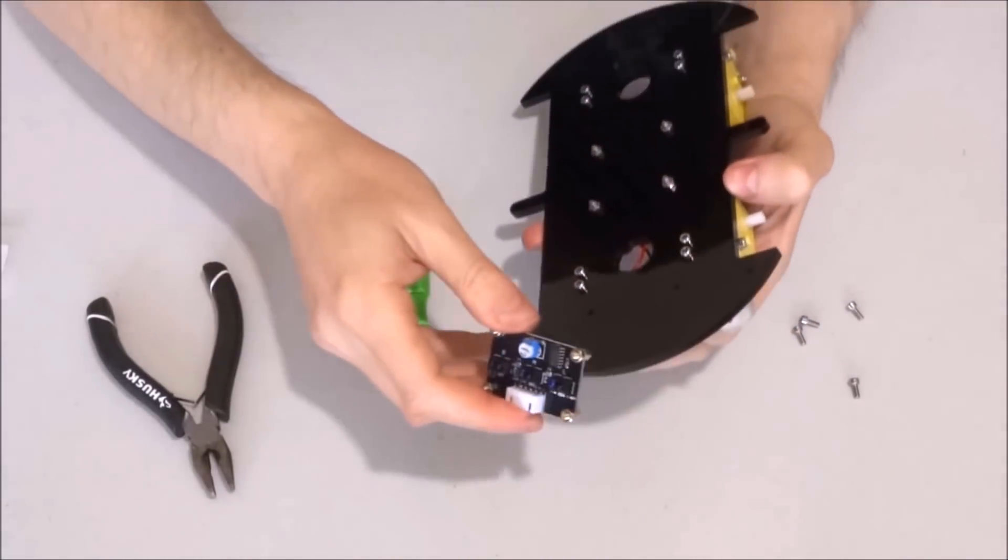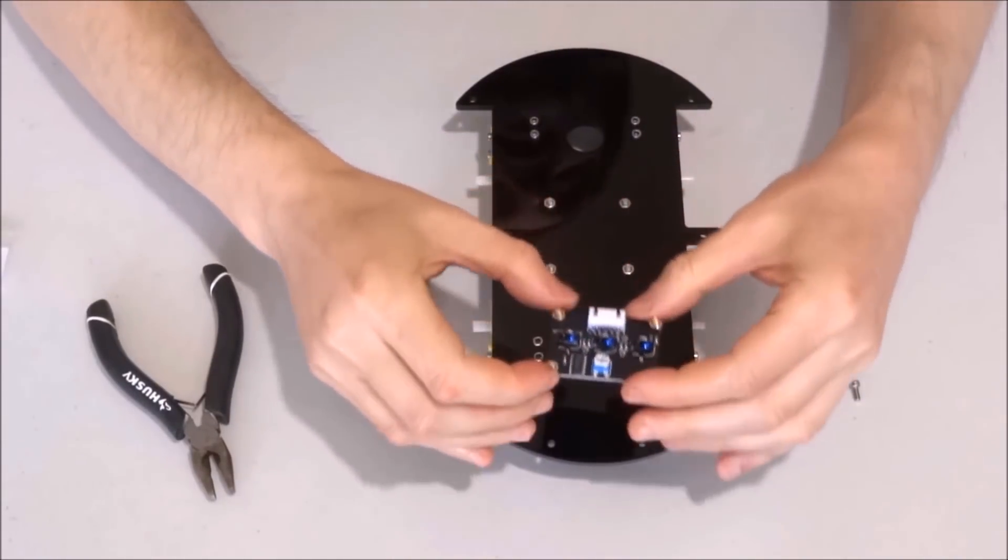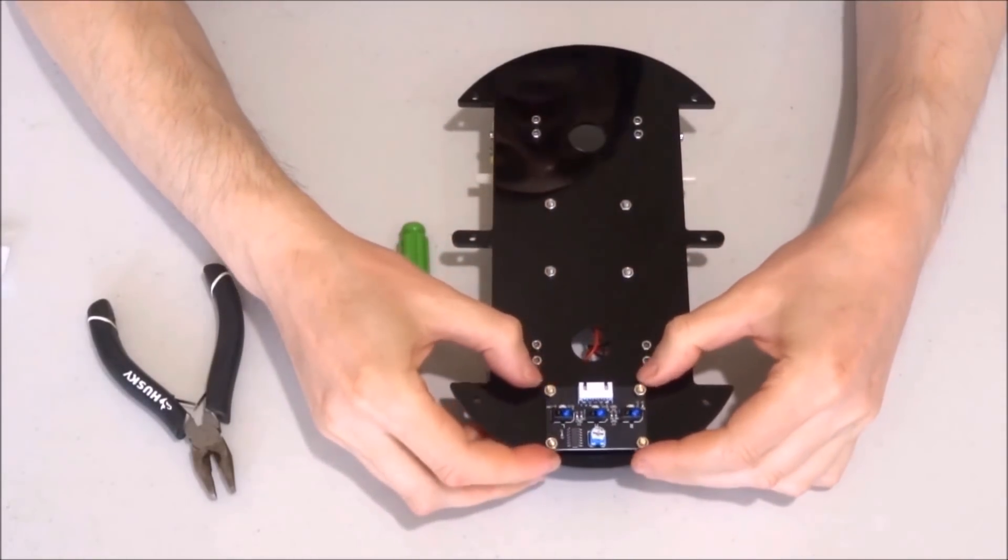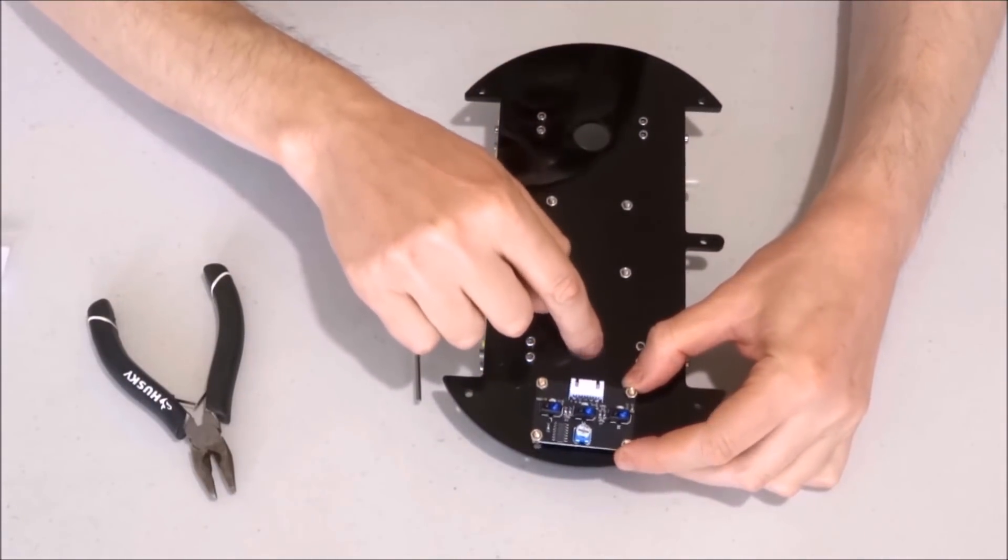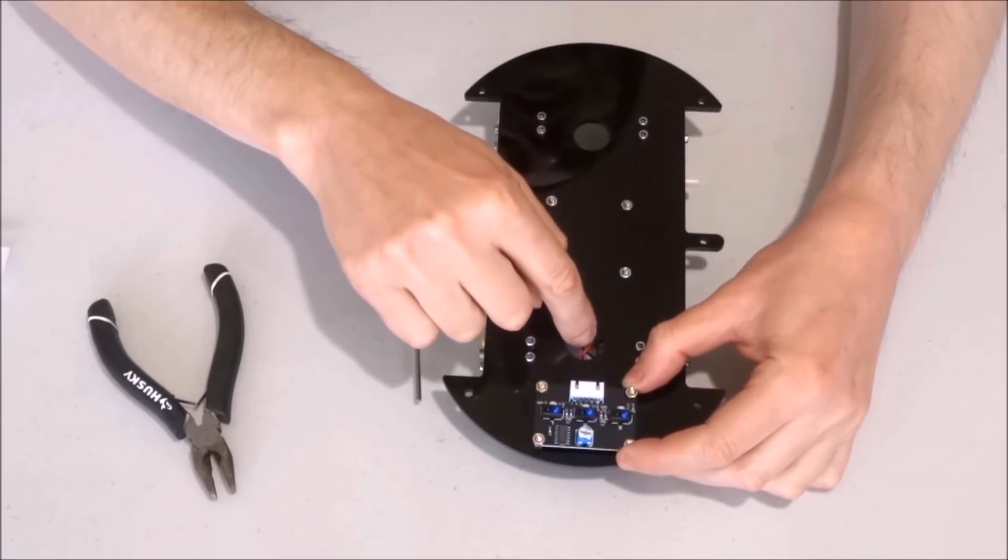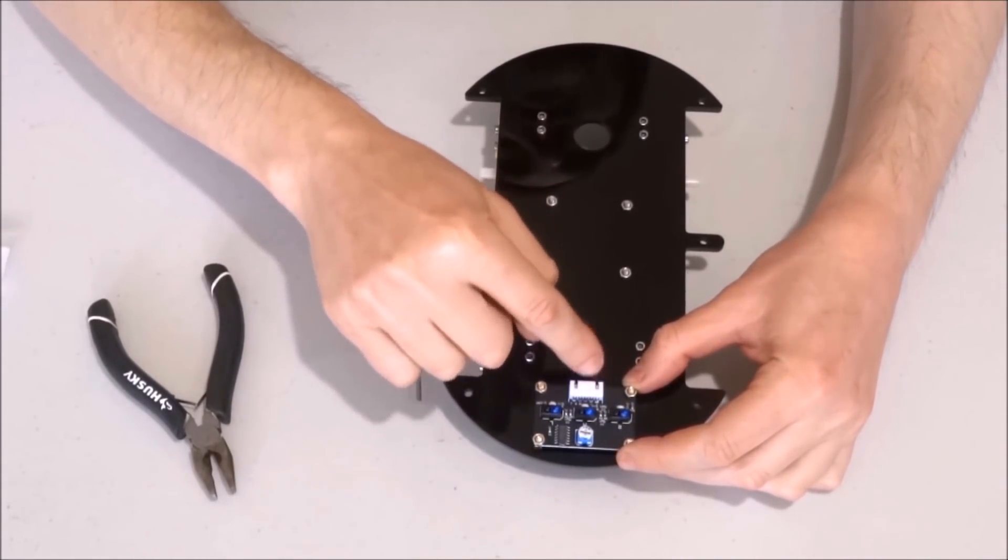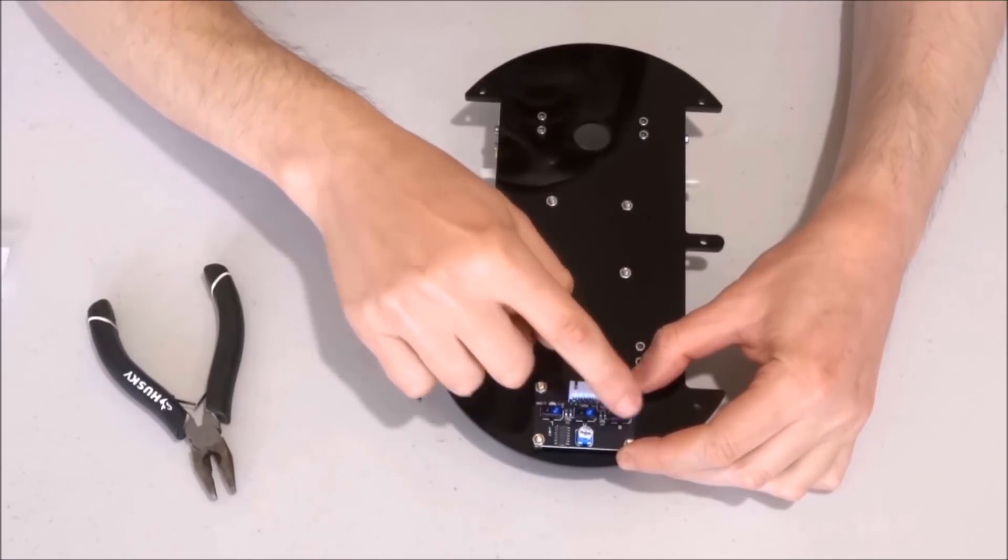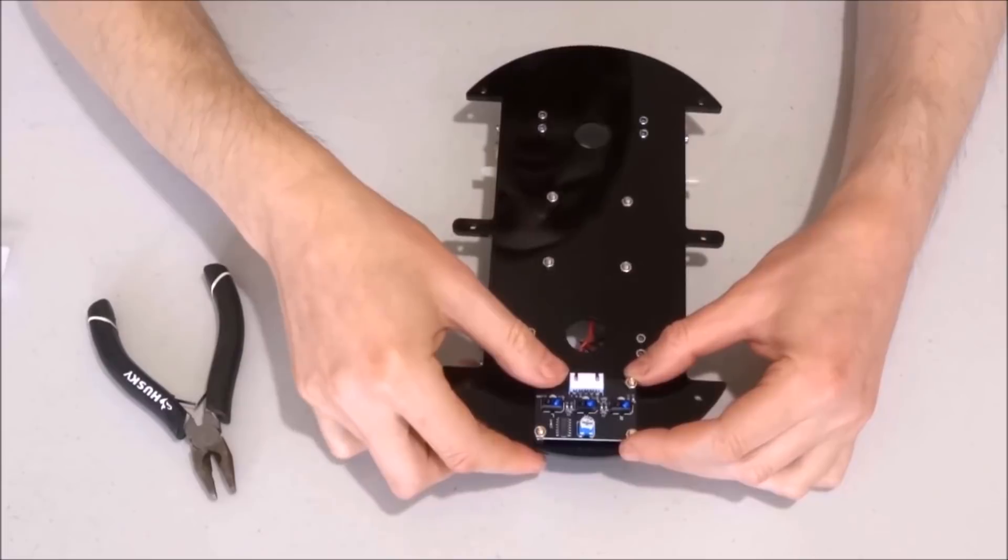Now we can turn over the chassis and place the board at the front of the robot in such a way that this connector points toward this opening in the chassis. This is where the cable will go from the three line tracking sensors toward the sensor board on the upper layer.